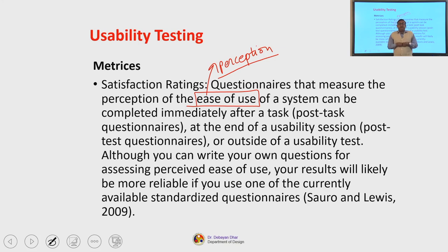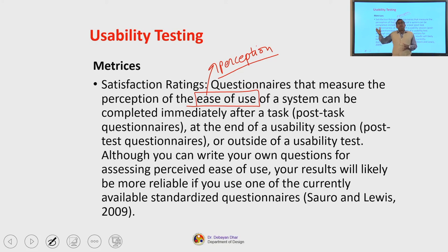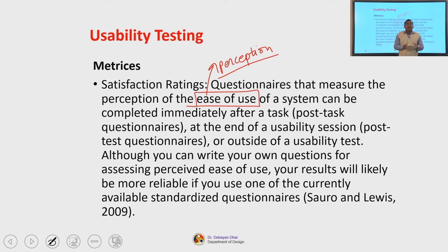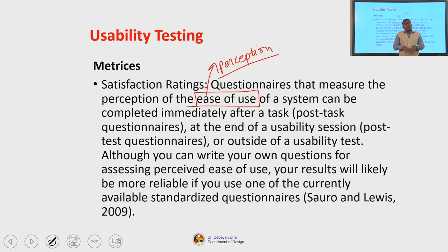At this stage, while you are being exposed to the concept of usability, it is not likely that you would embark on designing a questionnaire. Therefore, one ideal way to have a valid and reliable instrument is to use questionnaires that are already tested worldwide and have performed exceedingly well in terms of validity and reliability. One such questionnaire is the Soro and Lewis questionnaire of 2009, which measures satisfaction ratings. You can use those questionnaires and give them to your samples after task completion to obtain the data.